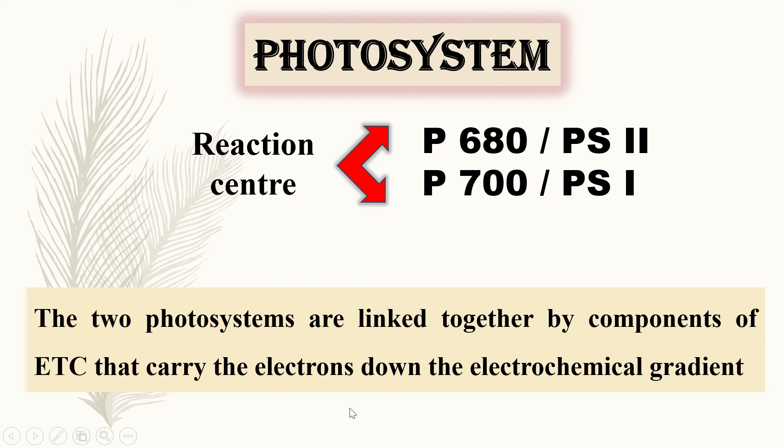Now what are the reaction centers? The reaction centers are categorized into two types. One is P680, the other is P700. P680 absorbs light whose wavelength is near 680. This is also known as photosystem 2. The other is P700 absorbing light whose wavelength is near about 700 nanometer. Therefore, it is also known as PS1.